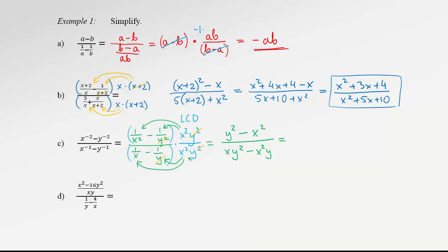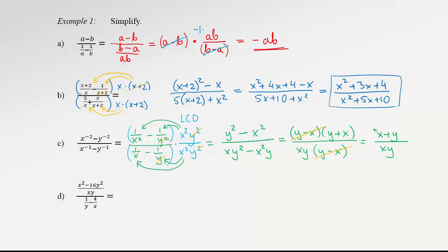That was the hardest step — not getting confused. After that, the question is nearly done. We need to factor the numerator and denominator to see what can be cancelled. In the numerator, we have a difference of squares: y minus x times y plus x. The denominator has xy as a common factor: xy times y minus x. After cancelling the y minus x bracket, we end up with y plus x — we can write x plus y — over xy. Pretty nice.